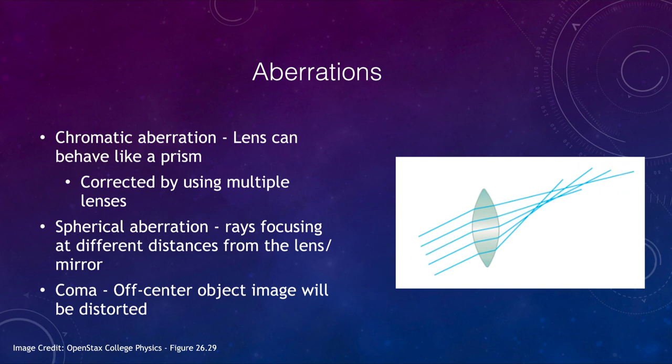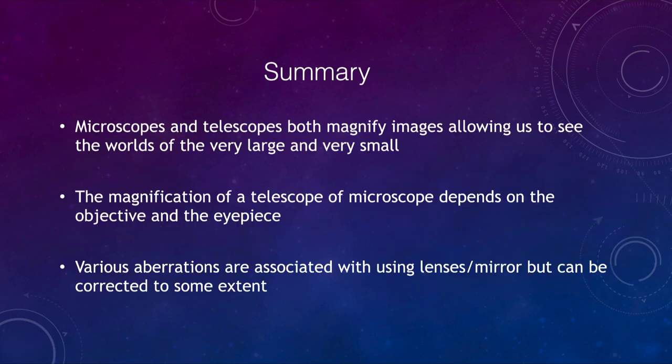Let's finish up here with our summary. We find that we have microscopes and telescopes that both magnify images, letting us see the worlds of very large and very small. The magnification of a telescope or microscope depends on the objective and the eyepiece. We talked about some of the various aberrations that are associated with using lenses or mirrors, but to some extent these can be corrected. So that concludes this lecture on microscopes and telescopes. Have a great day everyone and I will see you in class.